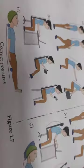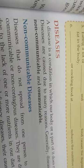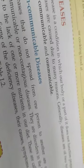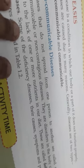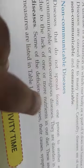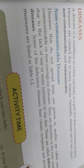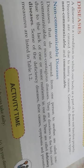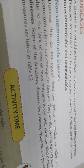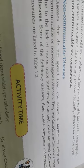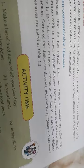A disease is a condition in which our body or a part of it does not function properly. Diseases are of two types: non-communicable and communicable. Non-communicable diseases do not spread from one person to another. They are disorders caused due to the lack of one or more nutrients in our diet — these are called deficiency diseases.